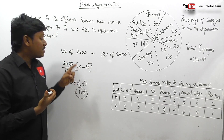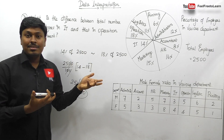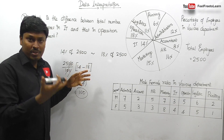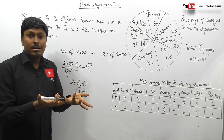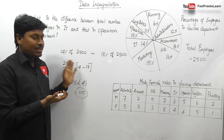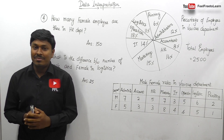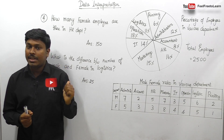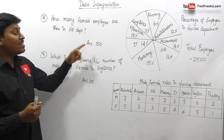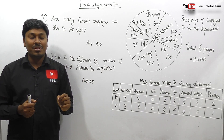For tougher PO-level exams, percentages may be decimals like 14.01% or 18.93%, but apply the same logic. Take all values common and find the difference between the remaining numbers. Try to solve question four and five on your own — the answer to question four is 150 and question five is 25. Thank you so much for watching this video, bye!